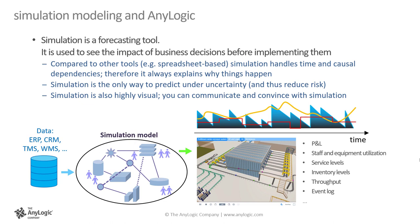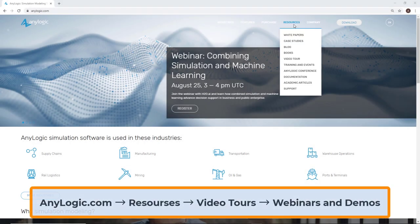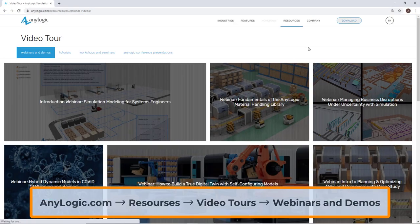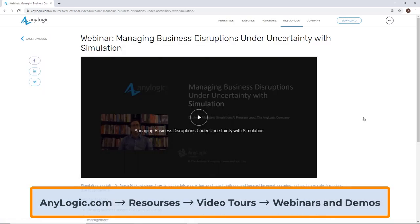Now, let's take a look at simulation modeling and AnyLogic. Simulation is a forecasting tool. It is used to see the impact of business decisions before implementing them. Compared to other tools, simulation handles time and causal dependencies. Therefore, it always explains why things happen. Simulation is the only way to predict under uncertainty, and simulation is also highly visual. You can communicate and convince with simulation.